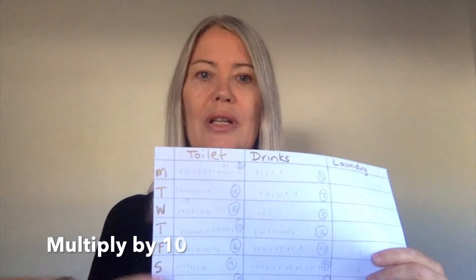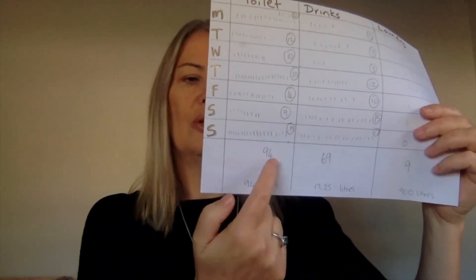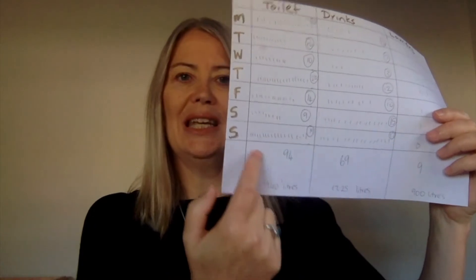For every flushing of the toilet, multiply the total by 10 — it's 10 liters. So every time a toilet is flushed it averages out at 10 liters.